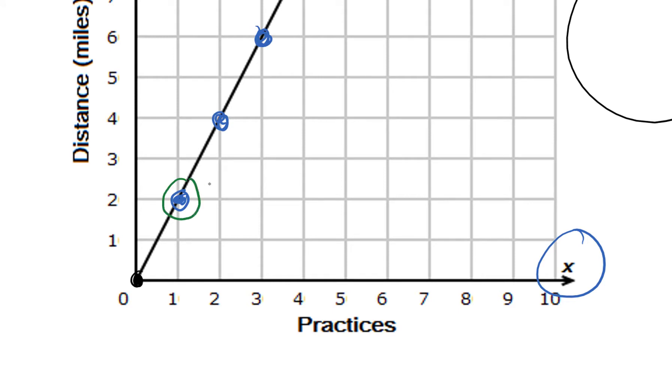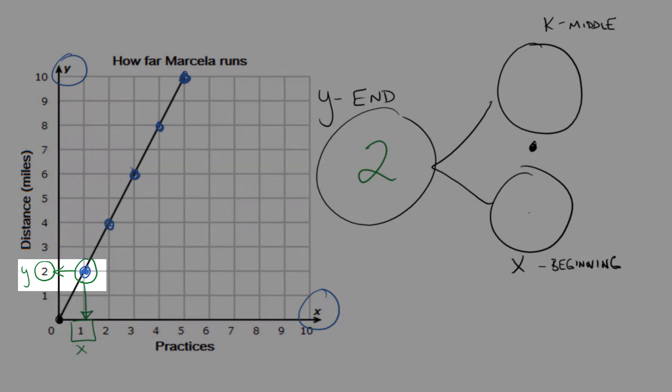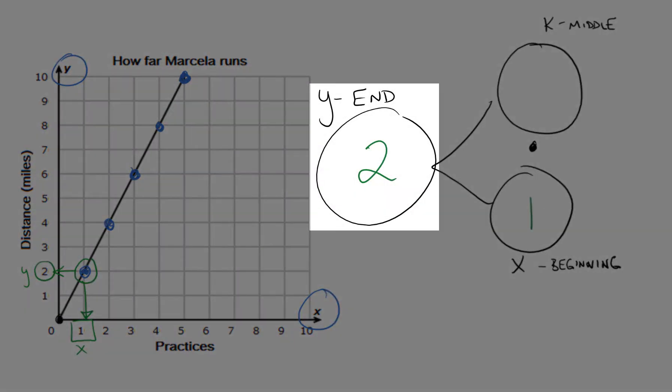Let's pick this one right here. I'm just going to see what y value and what x value are associated with this point and plug those values into my number bond. I have 2 and I have 1.